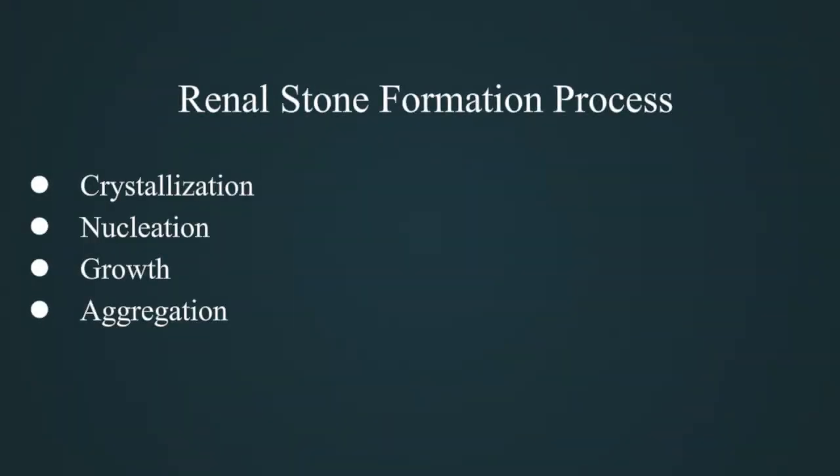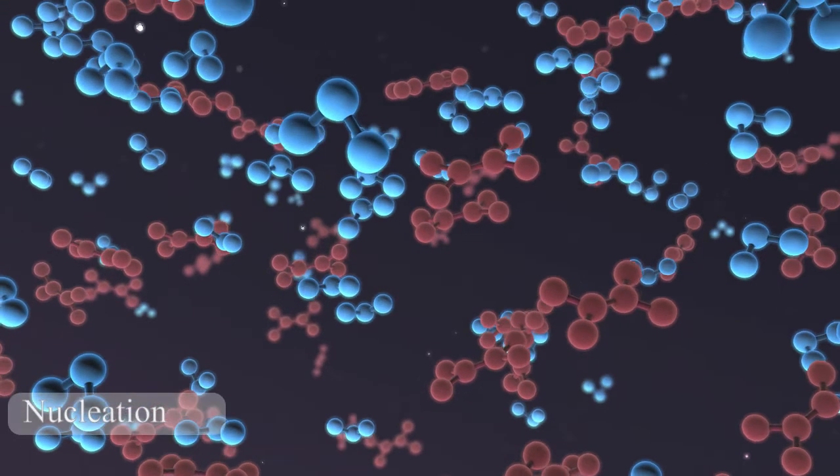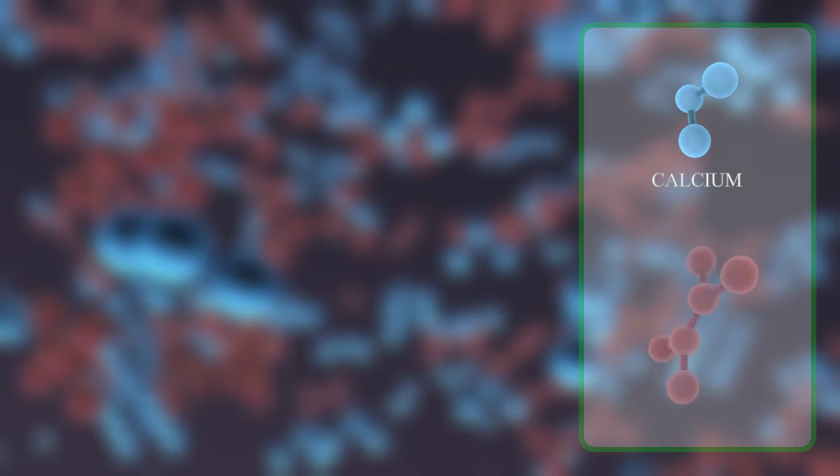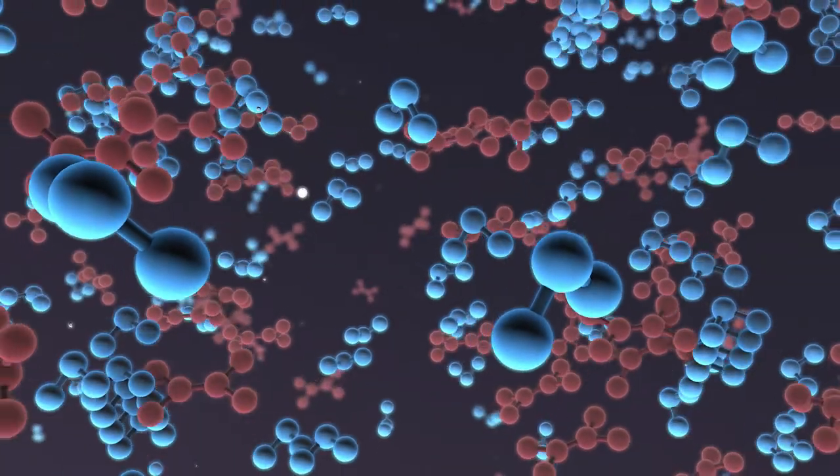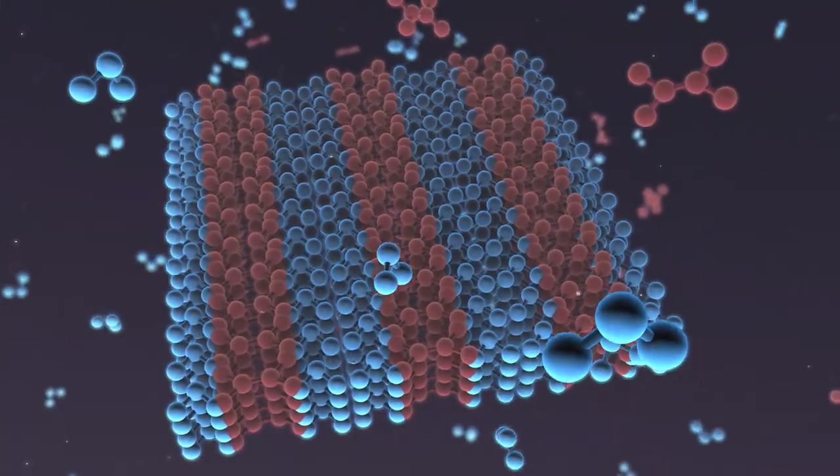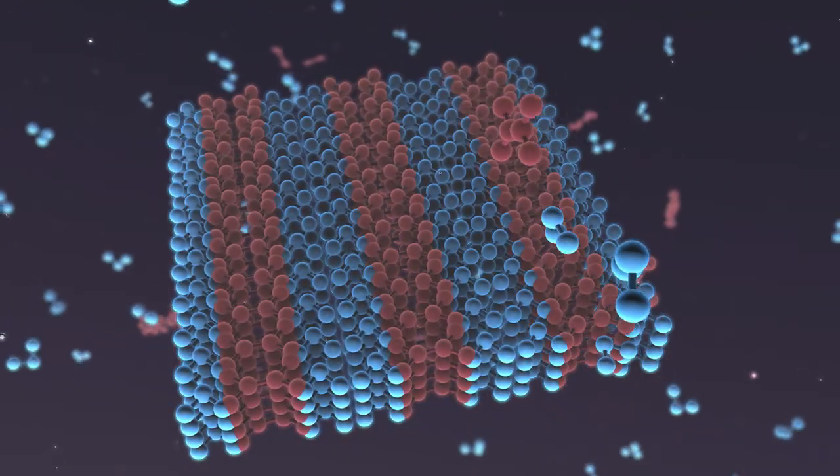Renal stone formation process includes crystallization, nucleation, growth, and aggregation. Nucleation is the process in which stone salts in solution combine into loose clusters that may increase in size. Nucleation can be homogenous or heterogeneous.